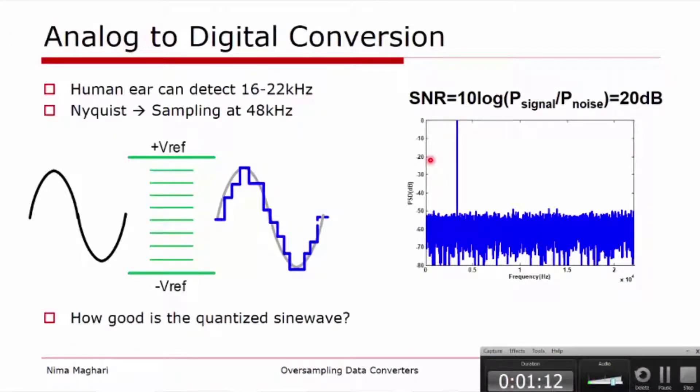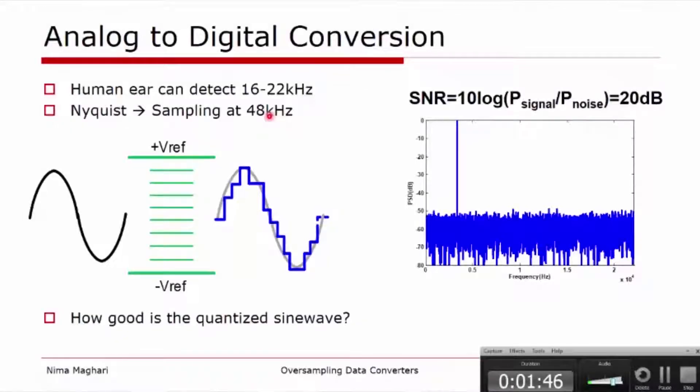First I want to talk about the need for oversampling data converters. One of the tangible applications can be related to audio, and a lot of oversampling converters over the years were used for audio conversion. The human ear can detect signal range from 16 Hertz to roughly 22 kilohertz. If we use Nyquist sampling, we have to sample at almost or a bit larger than twice the bandwidth, so it's common to sample at 48 kilohertz.